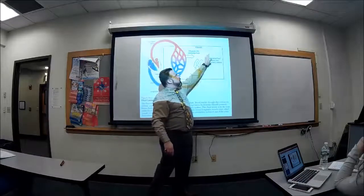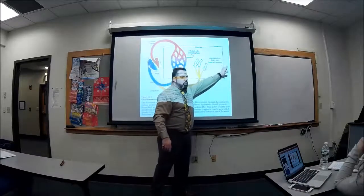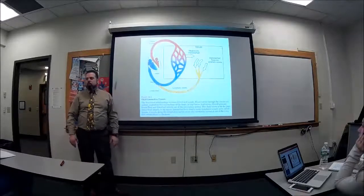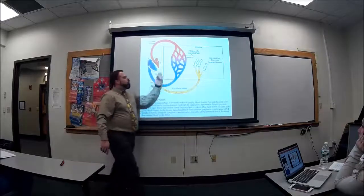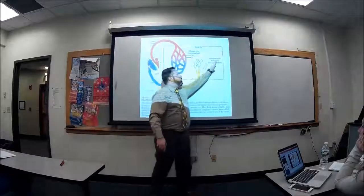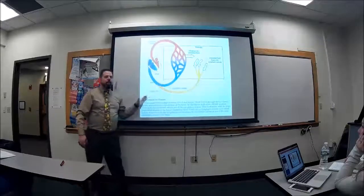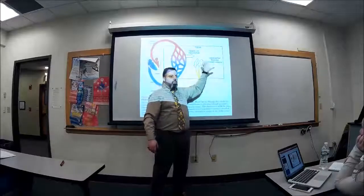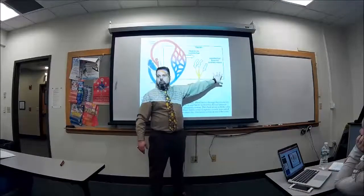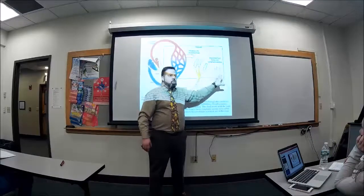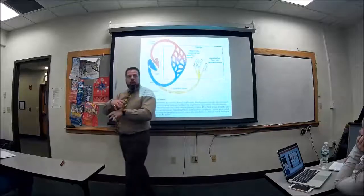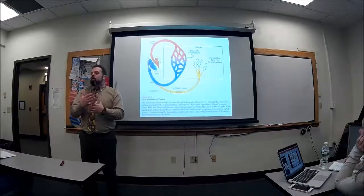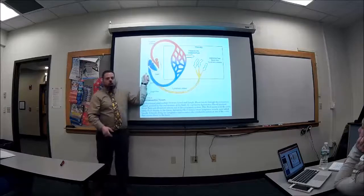If 30 liters goes out into interstitial tissue, you would expect 30 liters to come back. That's not what happens. Because of the physics, 30 liters goes out but only 27 liters comes back in. That leaves 3 liters sitting in the interstitial area. If it stays there, it will be bloated — that's edema. The fluid just builds up. So we've got to have a mechanism to get that fluid back to the heart.